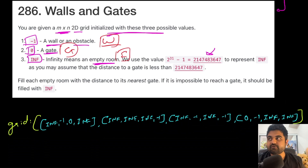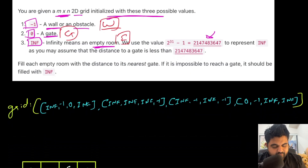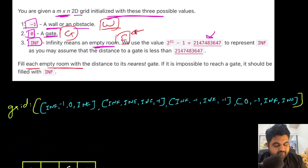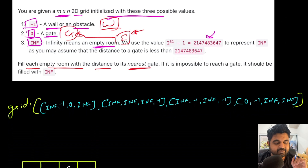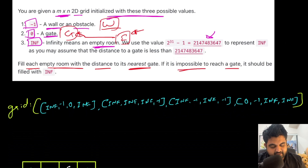We need to fill each empty room — each cell that contains the value INF — with the distance to its nearest gate. If it is impossible to reach a gate, then it should remain filled with an infinite value, meaning it stays as an empty room.